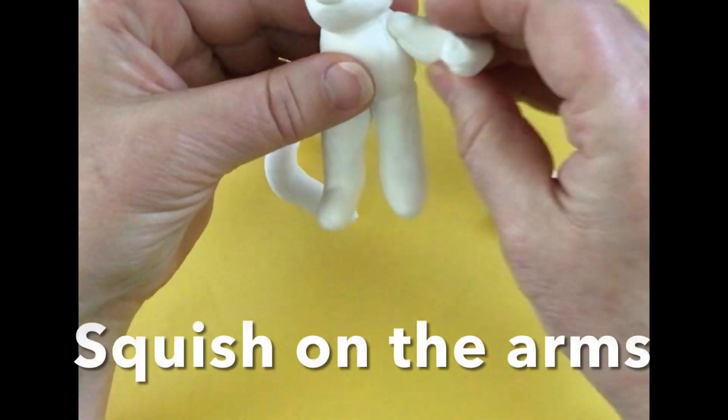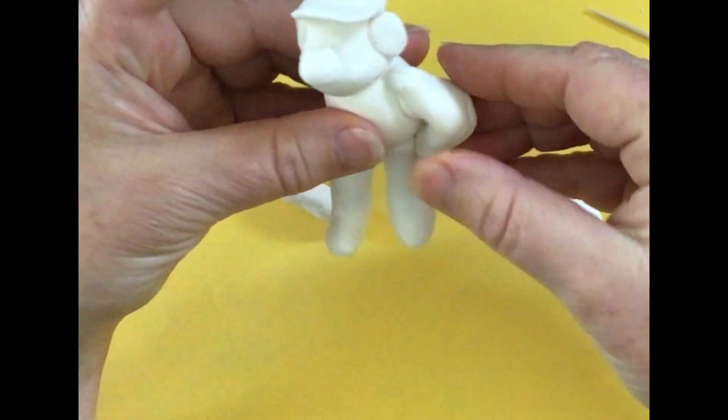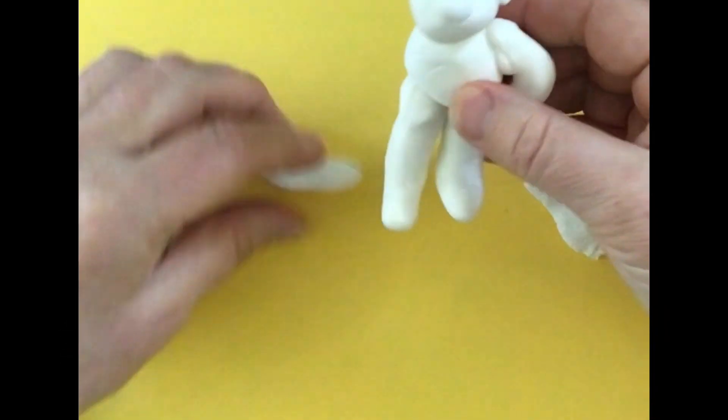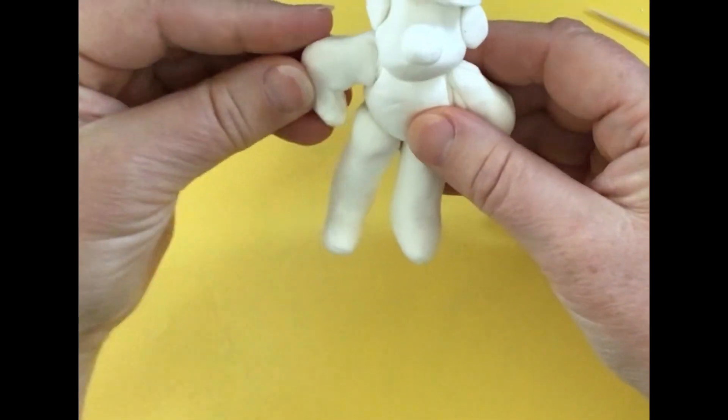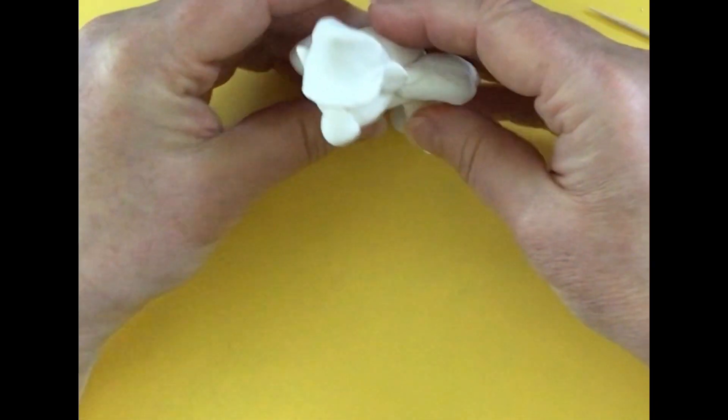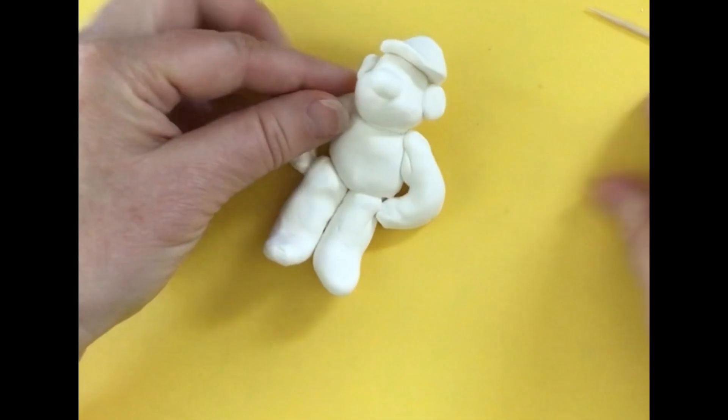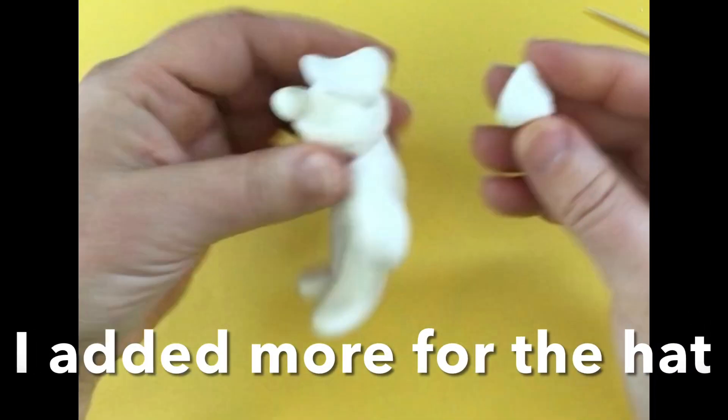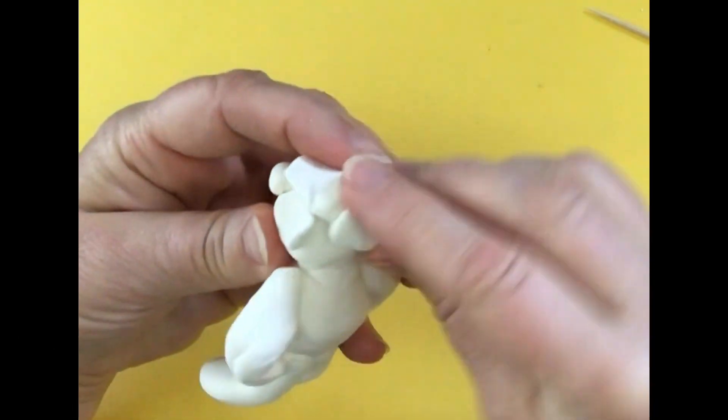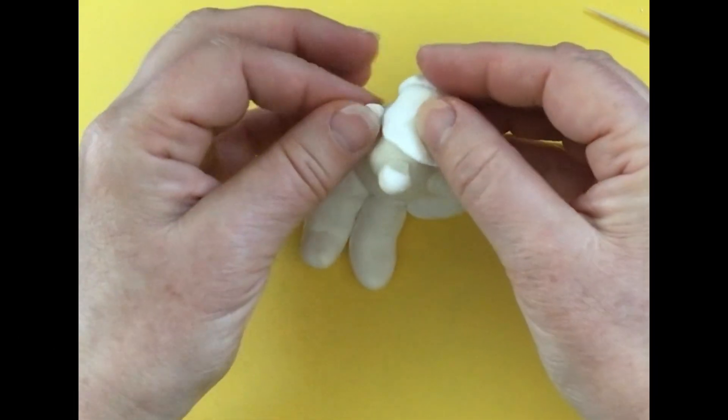I'm going to wiggle on the arm and turn it so it looks like it's on its hip. And do the same thing for the other arm. Just kind of squish it on and then turn it. I'm going to now adjust it a little bit. I want to add a little extra clay for the back of the head. You can just kind of add it and tap it and just keep tapping it until it connects.